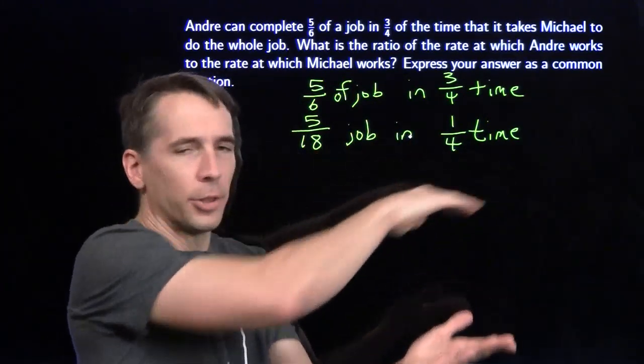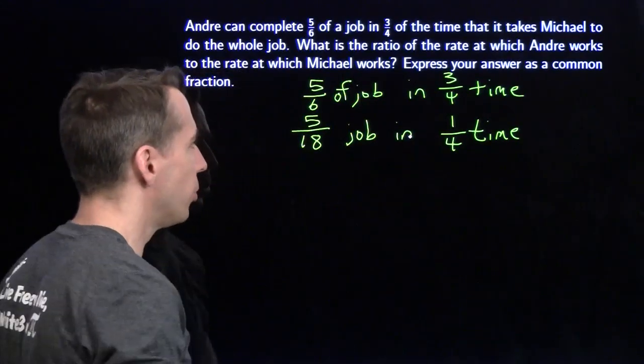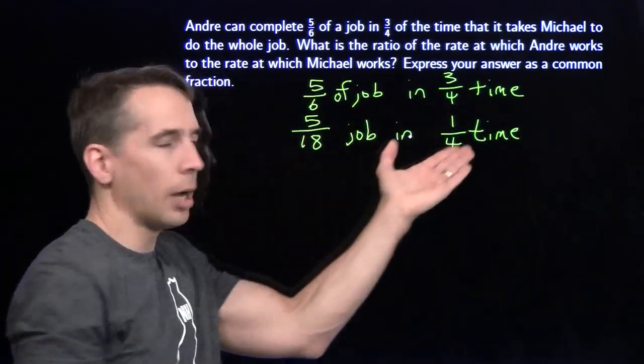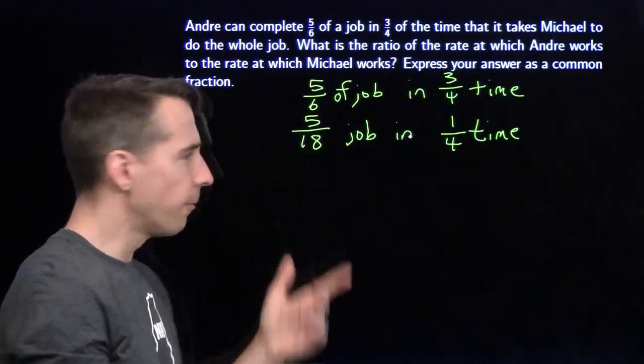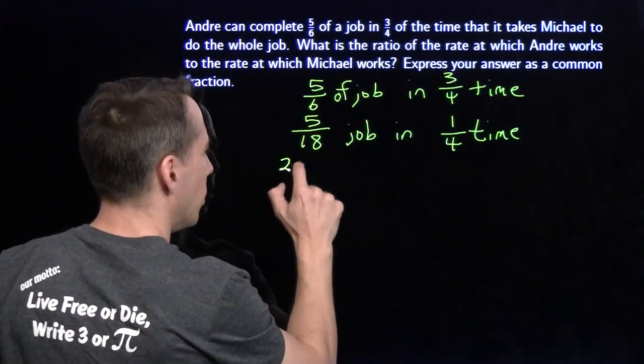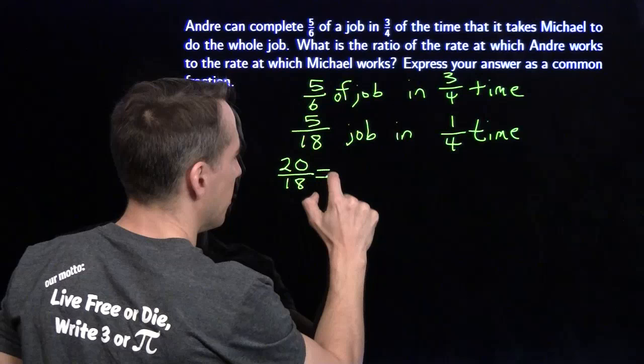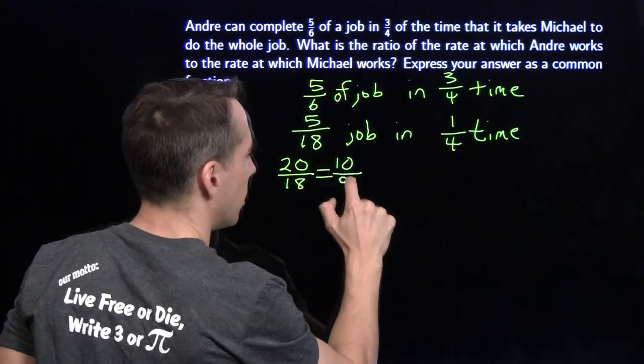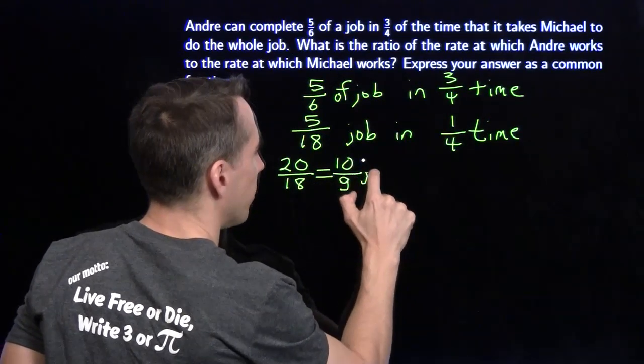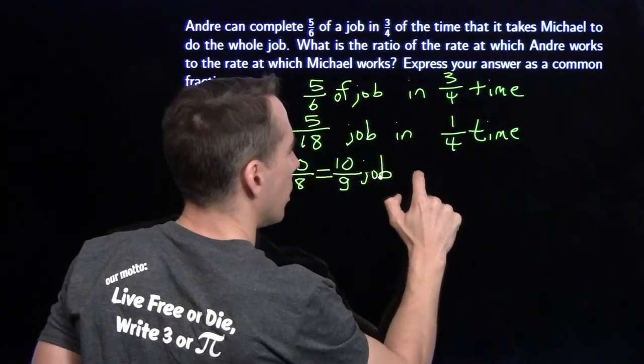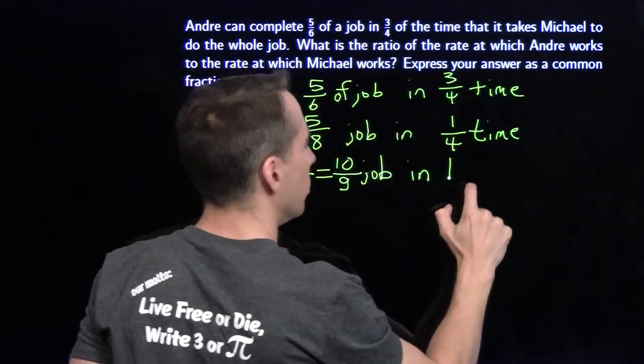And now we see where to go. We just multiply through by 4. If he can do 5 eighteenths of the job in 1 quarter of the time, then I multiply this by 4 and I find out he can do 20 eighteenths, which is the same as 10 ninths of the job in 1 unit of time.